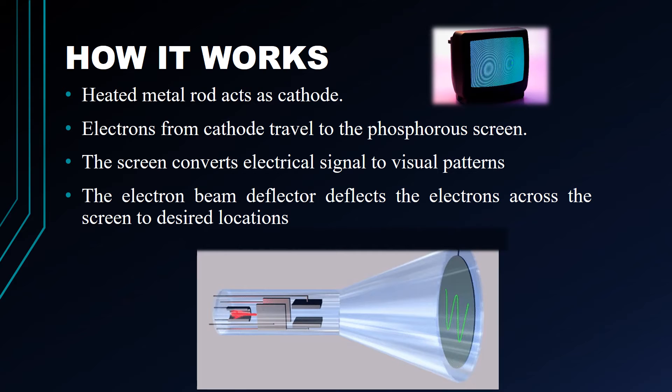A cathode ray tube is made up of an electron gun assembly, the phosphor viewing surface, and the glass envelope. The first important part of the cathode ray tube is the heated metal cathode, also known as the electron gun. Heat is supplied to the cathode, which gets the electrons heated up. These electrons then start ejecting as a stream of negatively charged electrons which later accelerate towards the phosphor screen.